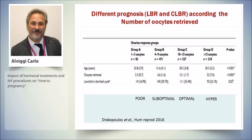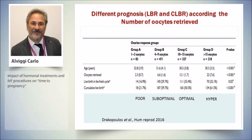Four groups have been clearly identified: classical poor responders, suboptimal with four to nine eggs, optimal with ten to fifteen eggs, and hyper-responders. But don't forget our initial question: what about having more than fifteen eggs? If we consider the cumulative pregnancy rate — the contribution of fresh and frozen embryo transfers — something changes. Introducing this crucial endpoint, which is key for defining time to pregnancy, we understand that moving from fifteen to more than fifteen eggs produces a dramatic increase in cumulative live birth rate. Having more eggs in a single cycle, combined with a frozen embryo transfer program, significantly improves cumulative outcomes.